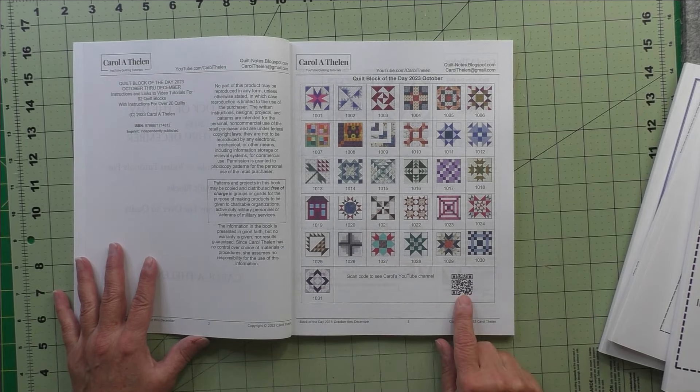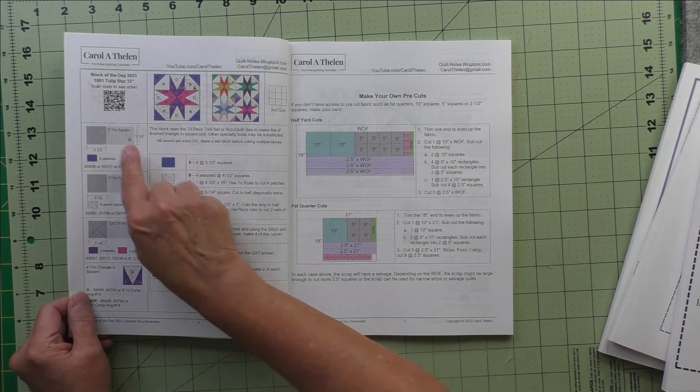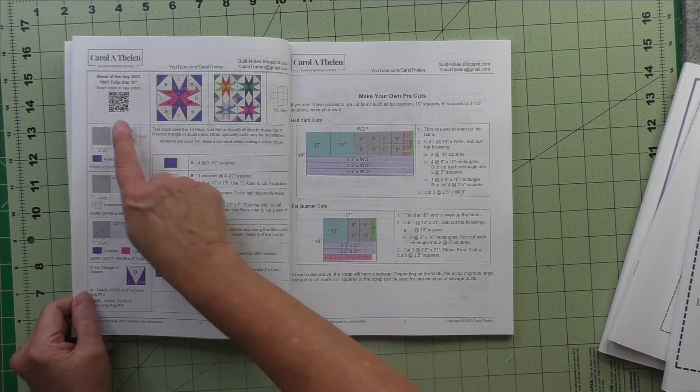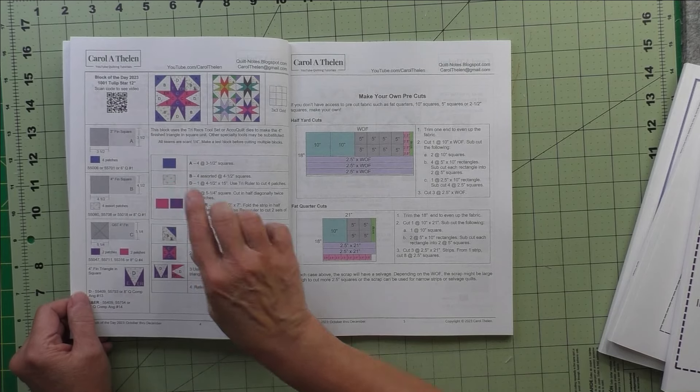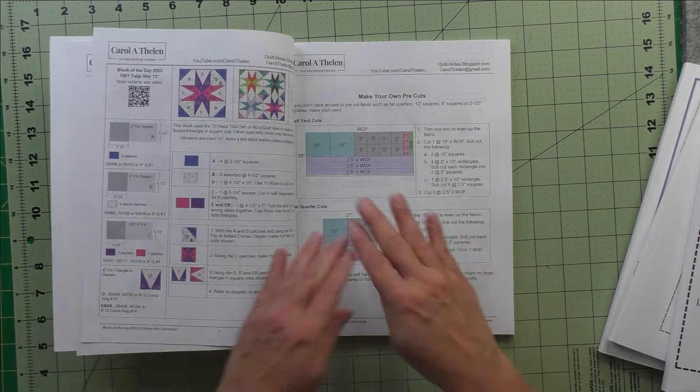And then every page will have a block, so this is block 1001. And here is the code you can scan to go directly to the video for this block.